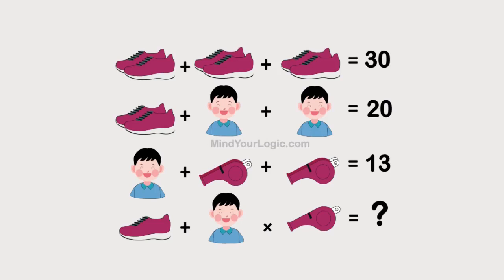Here is the math puzzle in which some pairs of shoes, whistles, and boys are given in the equation form. Solve the equation and find the individual value of them, which helps you to decode the final equation.